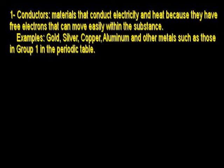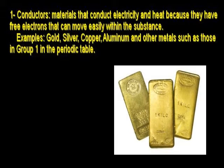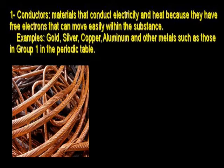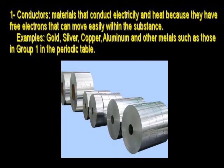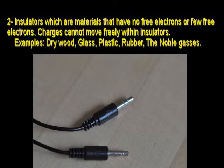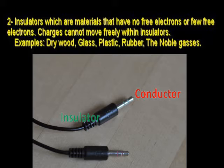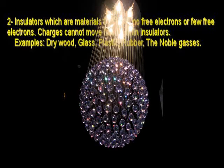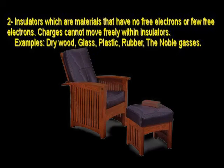Classification of substances: Conductors are materials that conduct electricity and heat because they have free electrons that can move easily within the substance. Examples: gold, silver, copper, aluminum, and other metals such as those in group 1 in the periodic table. Insulators are materials that have no free electrons or few free electrons. Charges cannot move freely within insulators. Examples include dry wood, glass, plastic, rubber, and the noble gases.